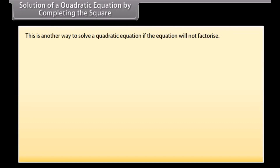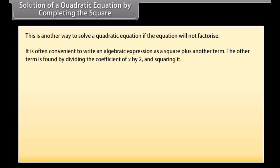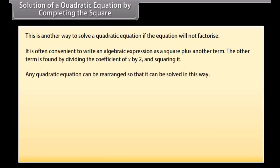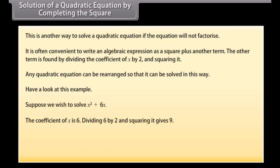Solution of a quadratic equation by completing the square. This is another way to solve a quadratic equation if it will not factorize. It is convenient to write an algebraic expression as a square plus another term. The other term is found by dividing the coefficient of x by 2 and squaring it. For example, rewrite x² + 6x: the coefficient of x is 6; dividing by 2 and squaring gives 9. So x² + 6x = (x + 3)² − 9.